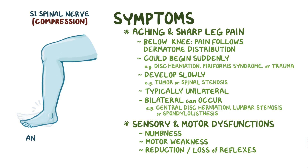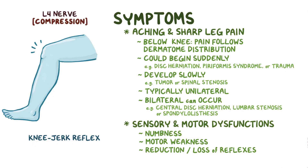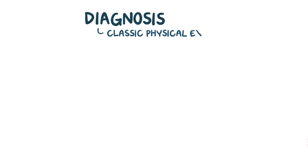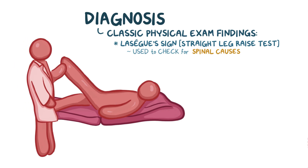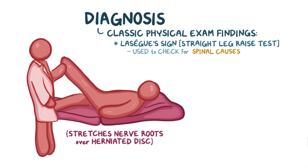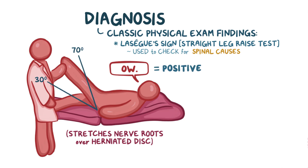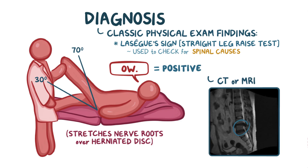S1 spinal nerve compression affects the ankle jerk reflex, while L4 nerve compression affects the knee jerk reflex. To diagnose sciatica, there are some classic physical exam findings. The LSEG sign, also called the straight leg raise test, is most often used to check for spinal causes. In this test, a person lays down on their back and an examiner lifts each leg with the knee straight. This stretches the nerve roots over the herniated disc or the object causing compression. If the sciatic pain worsens when the legs are between 30 and 70 degrees, the test is positive. A CT or MRI should also be done to look for the cause.